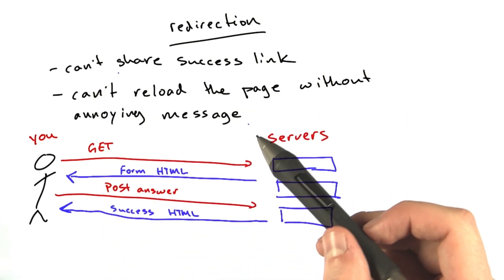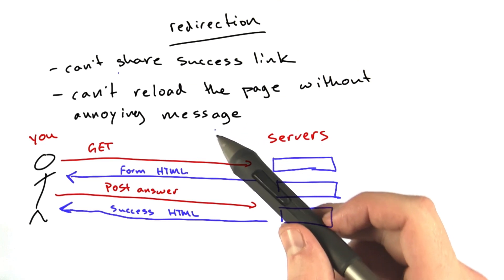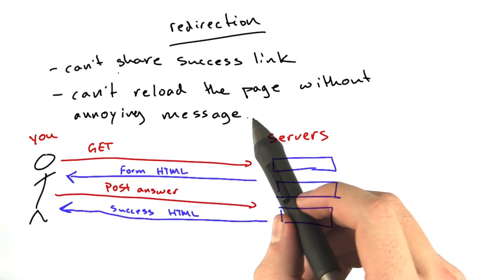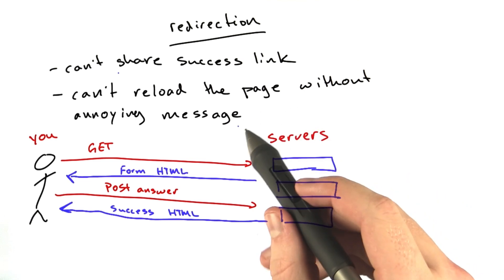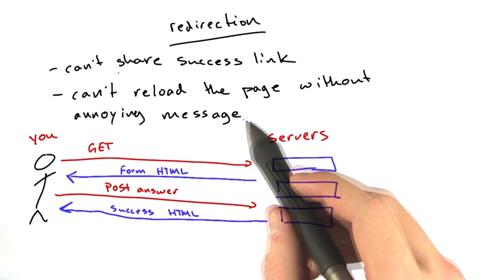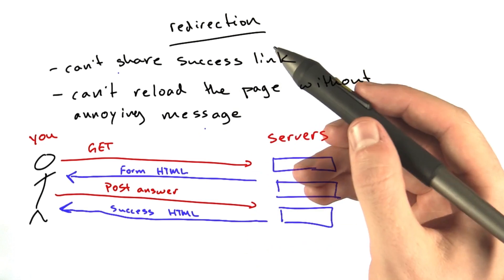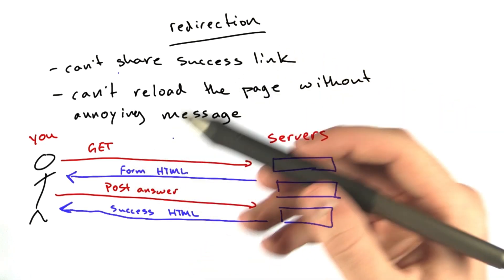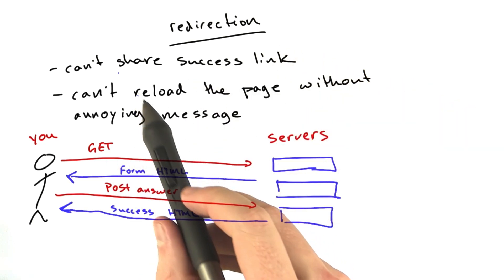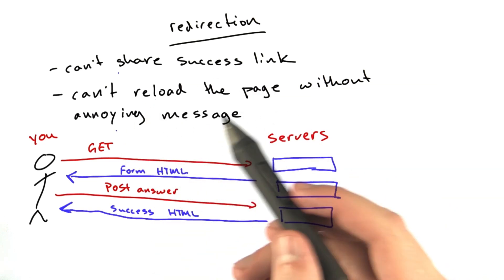Now imagine we weren't doing a contrived example like entering dates into text boxes, and instead we were adding a new blog post to our blog. We want to be able to see our blog post once we submit it, but we want to be able to link to that blog post, and we want to be able to reload that page without editing our blog post.